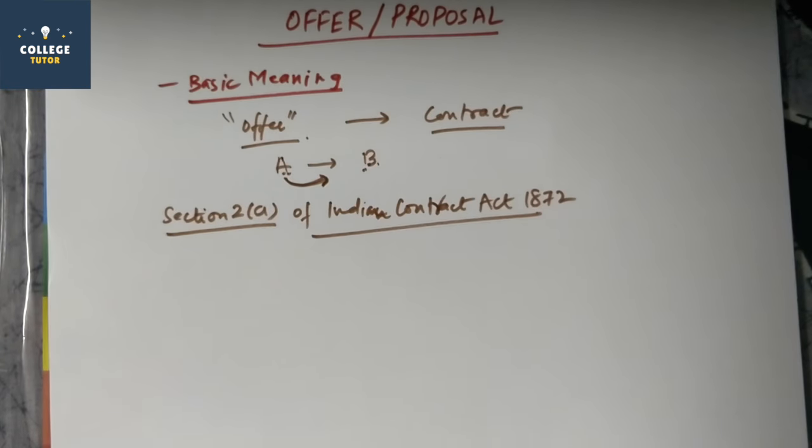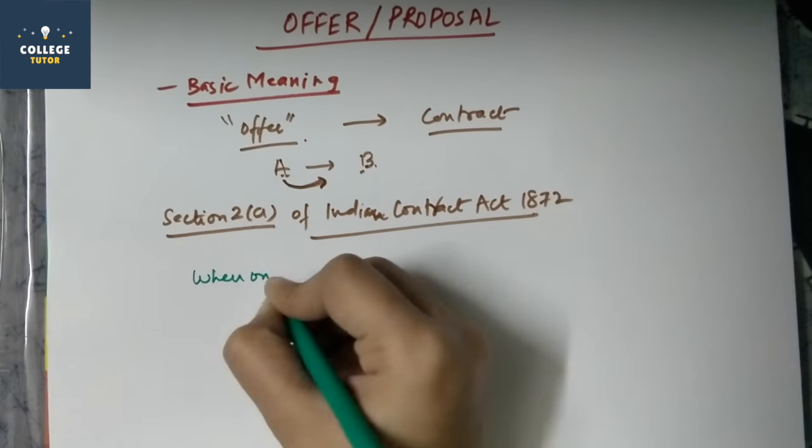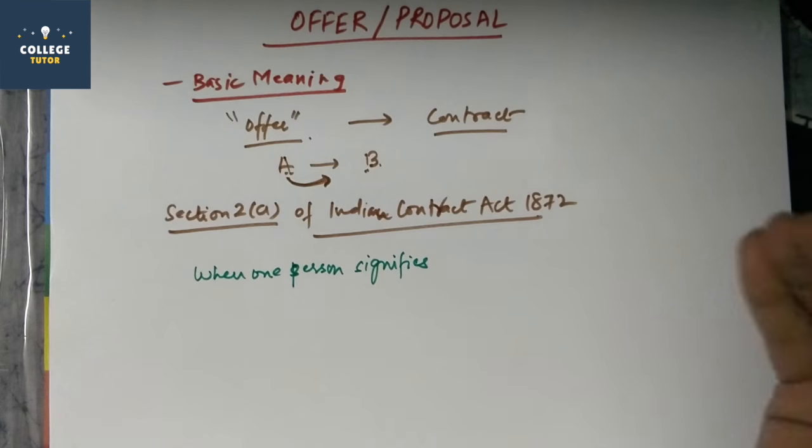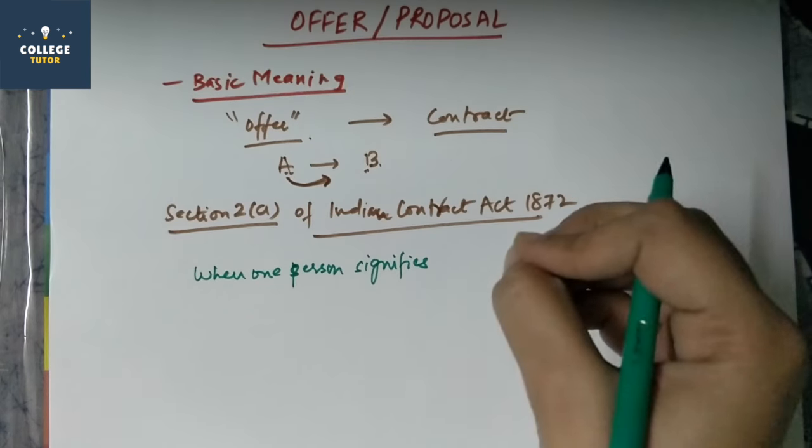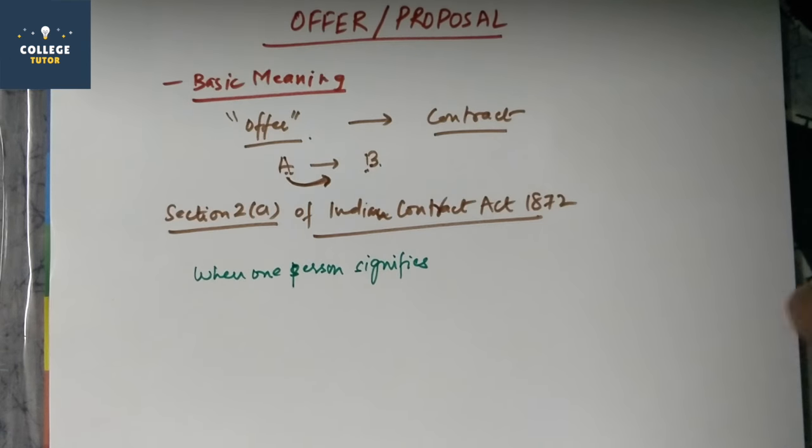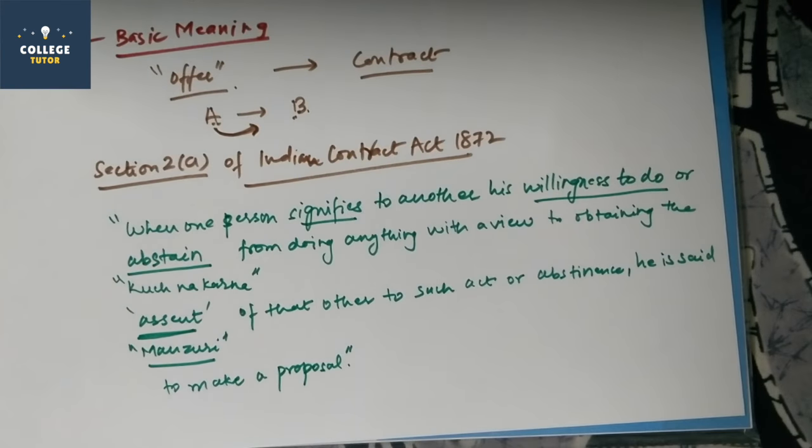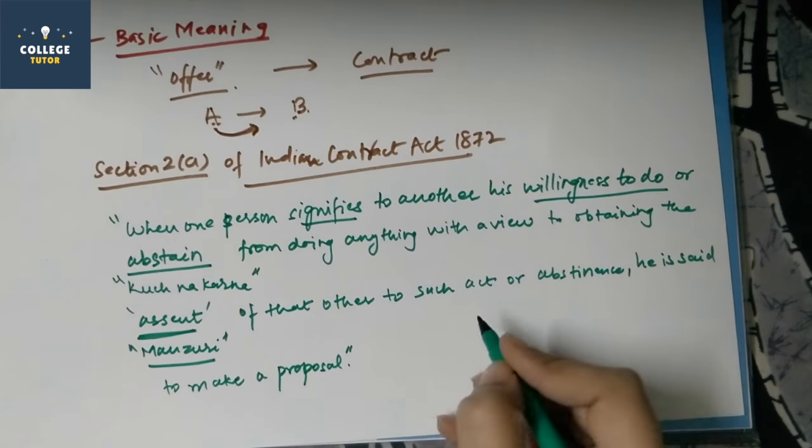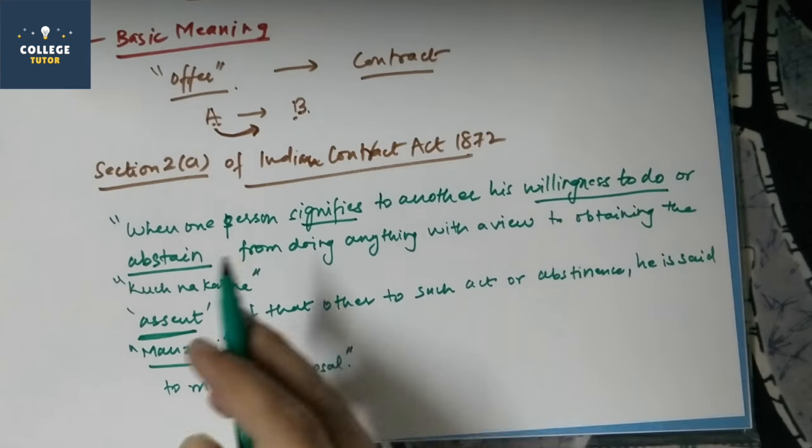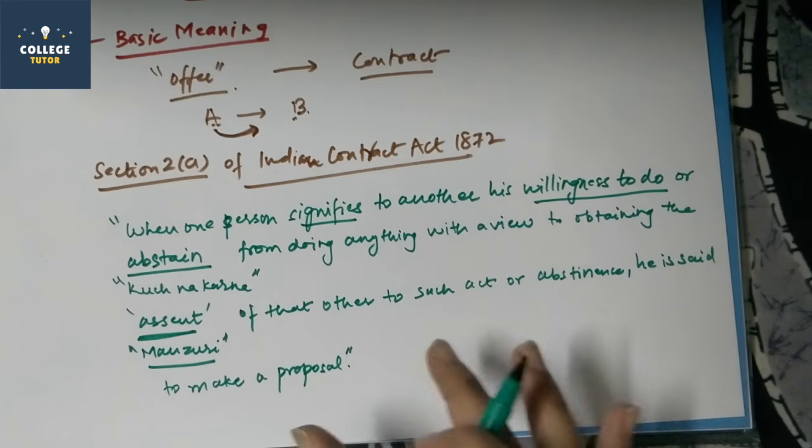Let's see the simple meaning. Offer is defined under Section 2A of Indian Contract Act. It says that when one person signifies what he wants to act, he is willing to do or he doesn't want to do. So when one person signifies his willingness to do or abstain from doing anything, either he wants to do or not, with a view to obtaining the assent, his willingness to make that other to such act or abstinence, he is set to make a proposal.